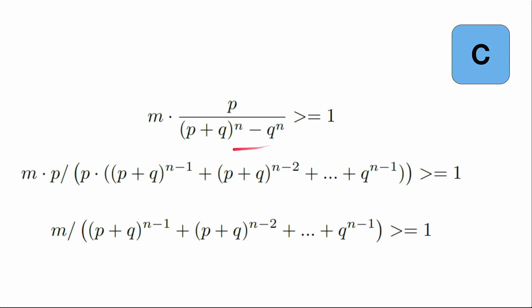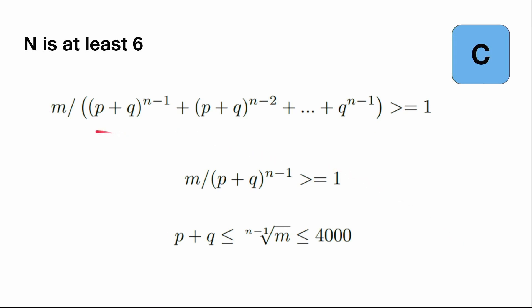Let's rewrite the denominator a bit. What we want to say is that if this is greater than one, then we can decrease the denominator and it will also be greater than one. But let's remember that we have at least six pirates, which means that p plus q should be less than the nth root of m, which is less than 4000.